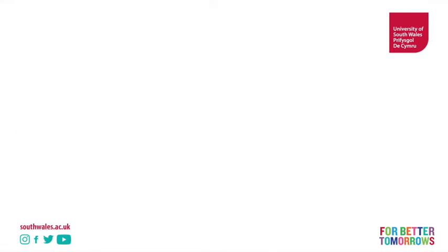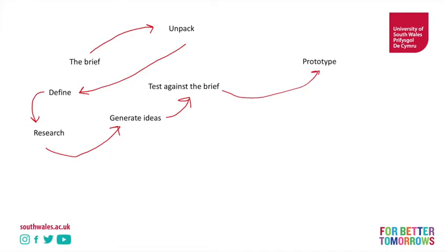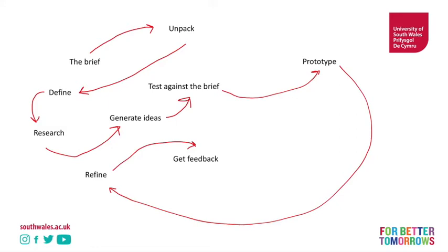A typical design process might look like this. You start with a brief, then you unpack the brief, then you define the issues relating to the brief, define your problem, then you do some research about it, you might generate a range of ideas, then you would test these ideas against the brief, then you might prototype those ideas, then you refine them a bit further, get some more feedback, then you would resolve your ideas. This is a pretty typical diagram that might show the way a design process would work.